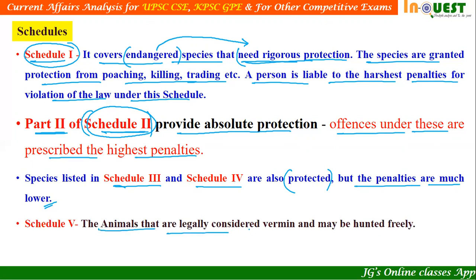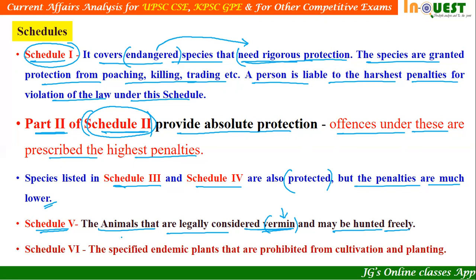Schedule 5 covers animals that are legally considered as vermin — species that cause disease to human beings or destroy agricultural crops. These vermin species may be hunted freely. Schedule 6 deals with plants — specifically endemic plants that are prohibited from cultivation and planting. Nobody can cultivate or plant species listed under Schedule 6.